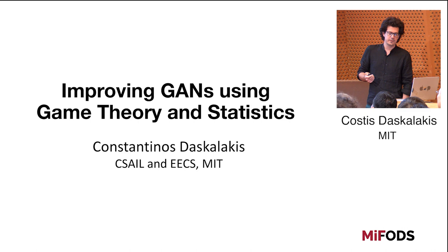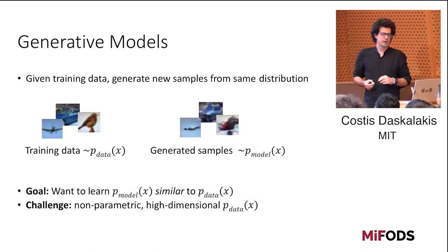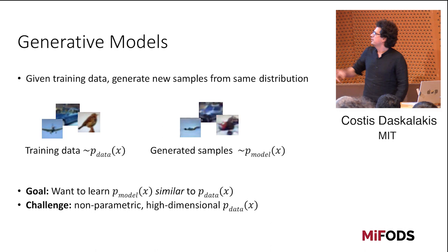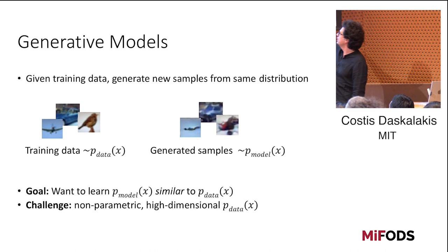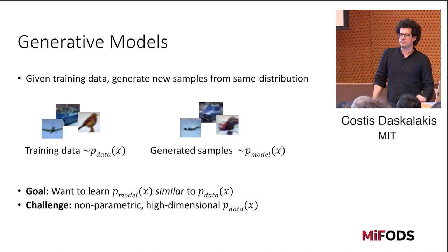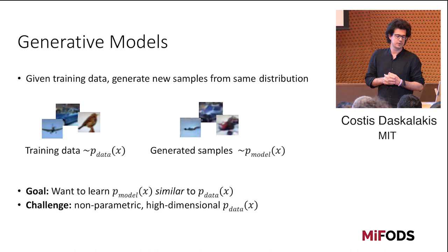So what is the problem that these GANs are trying to solve? It's a very classical one: getting a generative model. You're given data from the real world, presumably sampled IID from some world distribution. And you want to come up with a model that generates samples from the same distribution. So you want your model to be close to the real world distribution in some way. The challenge is that interesting distributions are high-dimensional and are not parametric.